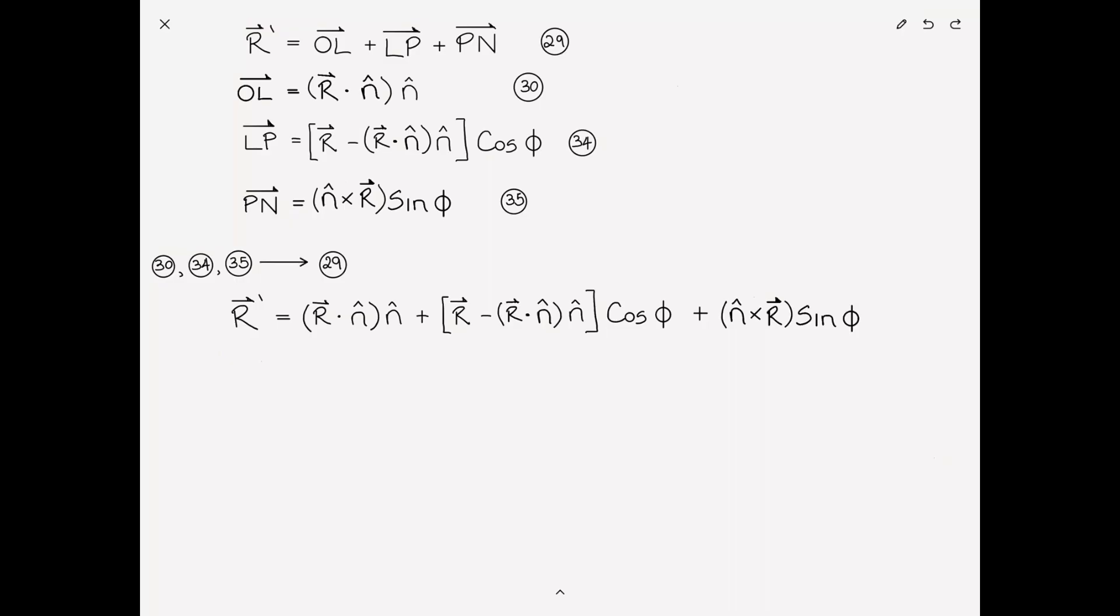I can rewrite this in a slightly different form by grouping everything that multiplies n̂. And this can be rewritten, therefore, as r prime is equal to (1 - cos φ) times (r · n̂) times n̂ plus r cos φ plus n̂ × r sin φ. And this, my friends, is the Rodriguez rotation formula. Number 36. So this is the Rodriguez formula, and it provides a very intuitive way of understanding what is going on in terms of the rotation.